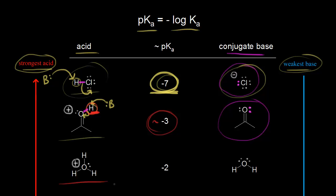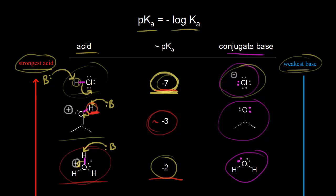Next, we have hydronium, H3O+. If a base comes along and takes a proton from hydronium, the pKa of that proton is approximately negative two. These electrons would come off onto the oxygen to form water as our conjugate base. So H3O+ has a higher pKa value than HCl, and therefore H3O+ is not as strong of an acid.